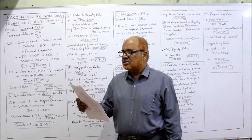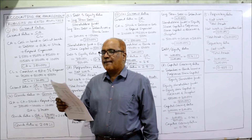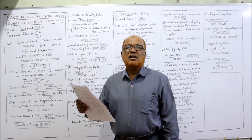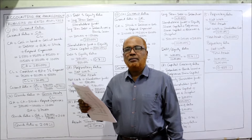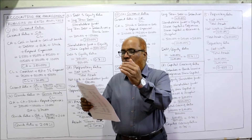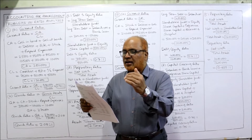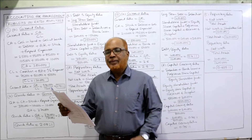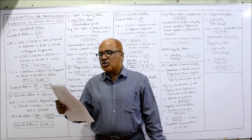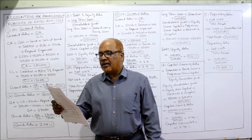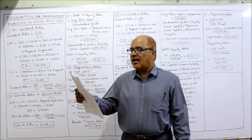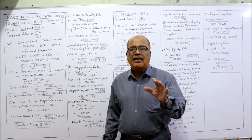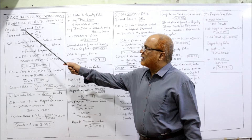Asset side: land and building, machinery, cash in hand, cash at bank, debtors, bills receivable, stock, prepaid expense. The first two assets — land and building and machinery — are fixed assets. The remaining — cash in hand, cash at bank, debtors, bills receivable, stock, prepaid — are current assets. We have to calculate current ratio, quick ratio, debt to equity ratio, proprietary ratio, and assets turnover ratio. Sales are 19 lakh 60,000.